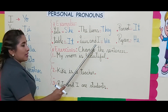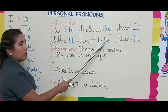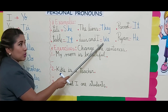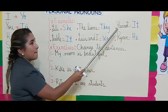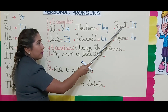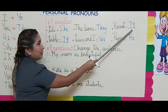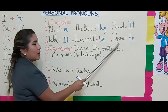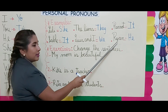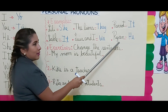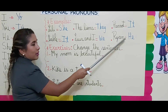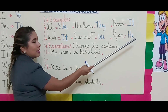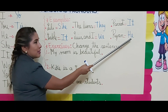Luis and I — we. Luis y yo, nosotros. Parrot — it. Loro — it. Ryan — he. Recuerda que es el nombre de un varón, por eso se utiliza he, él.